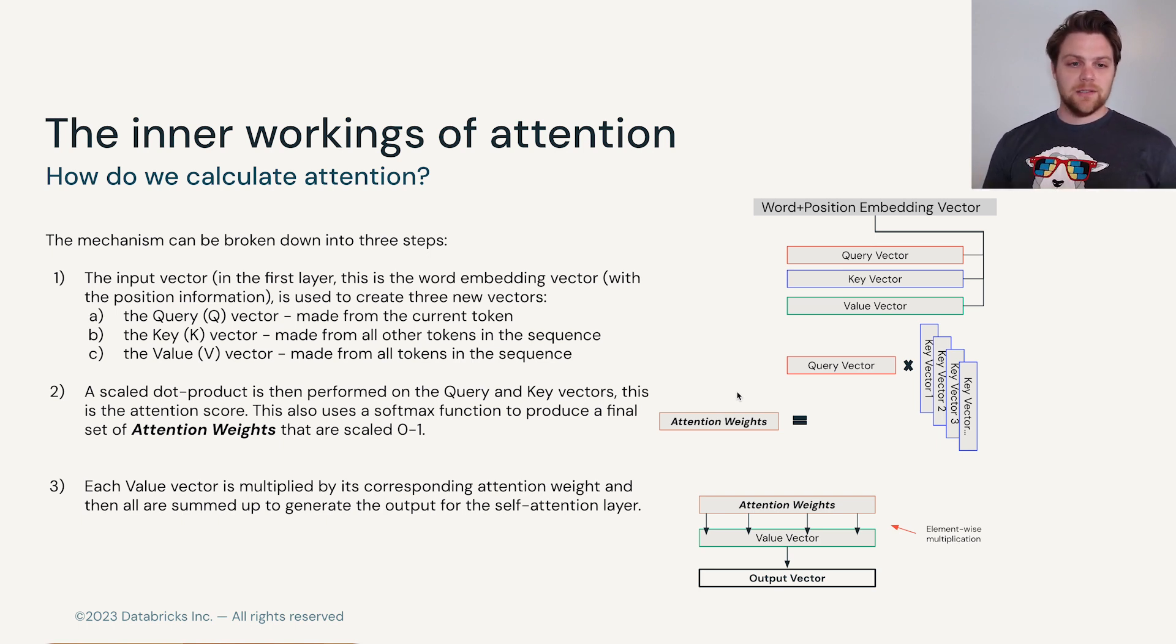So the query times key vectors gives us this attention weights and they're scaled from zero to one. And then we do a special type of multiplication so that for each position in our vector, the attention weight is multiplied by the value of the value vector at each of those indices. So from zero to the size of the embedding, we multiply a simple scalar product between the attention weight score at index zero with the value vector score at index zero, and we do that for each of them. This then gives us a full output vector of the attention score for that particular token across the entire sequence.